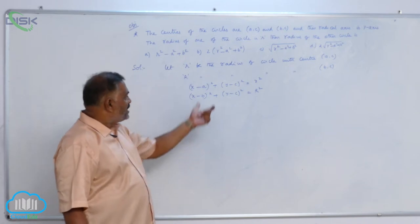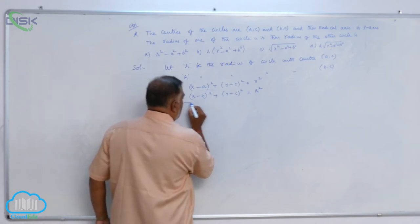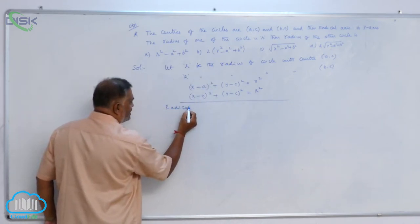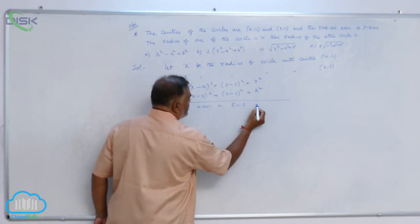The moment we get two circles here, straight away you can write the radical axis. So, the radical axis is given by: radical axis of two circles is S - S' = 0.